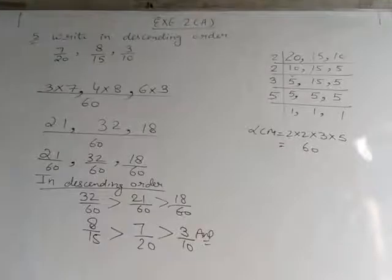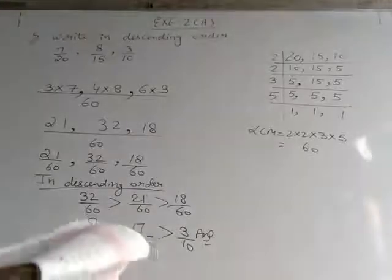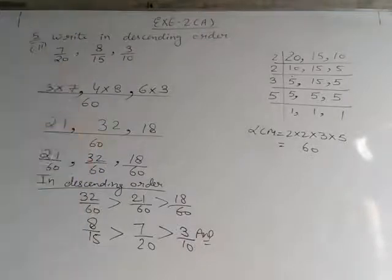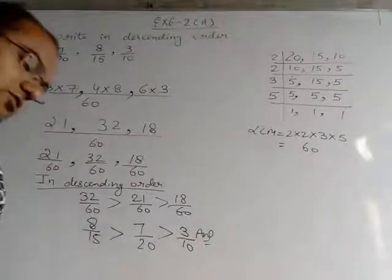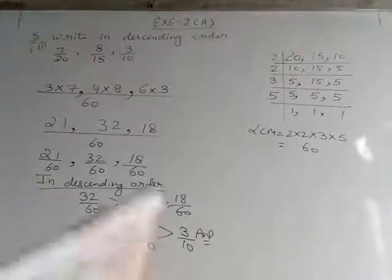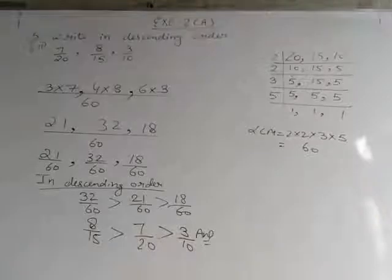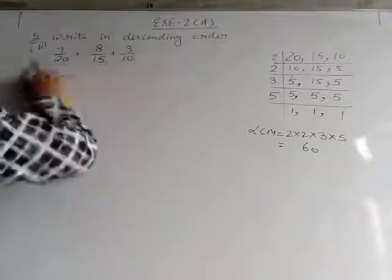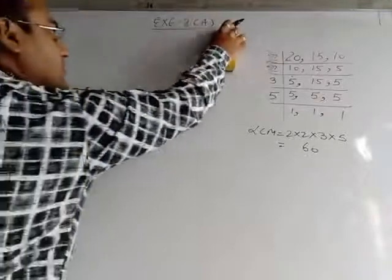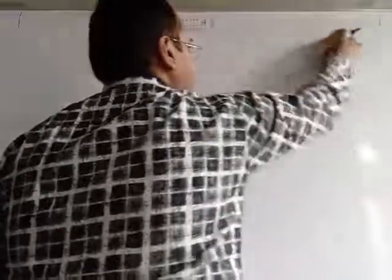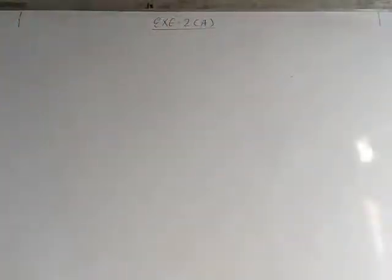This is question number 5, part number 2. Like this you have to do the remaining parts of question number 5 as well — all parts are the same. Now we come to question number 6, where we have to arrange fractions in ascending order. The same work we will do as we did here — first of all we will find the LCM.